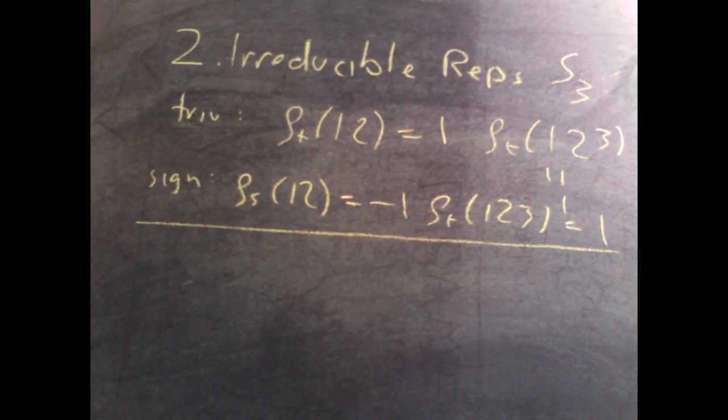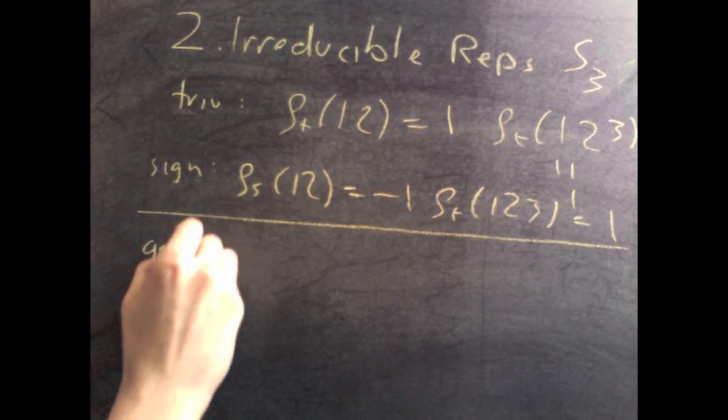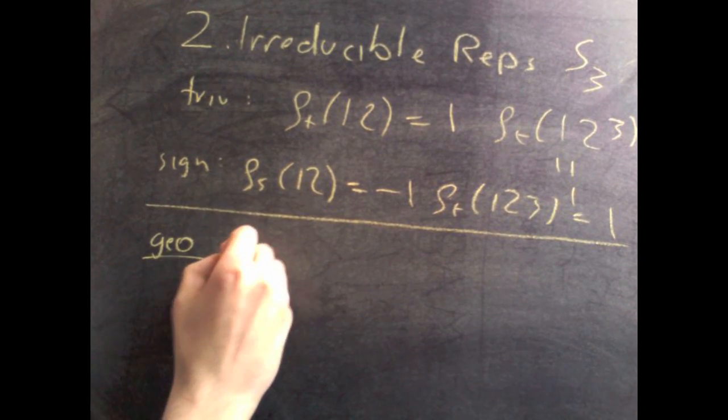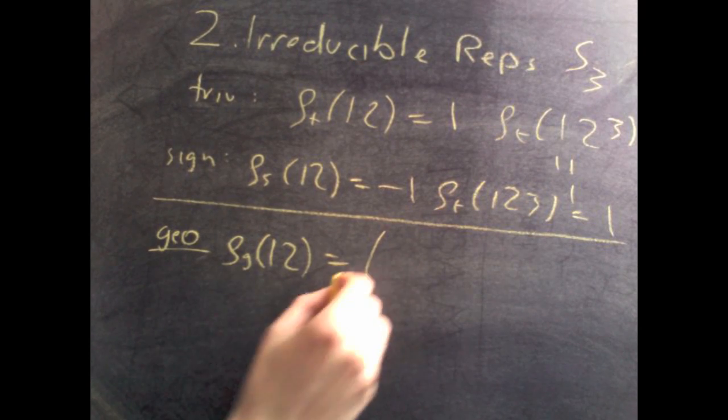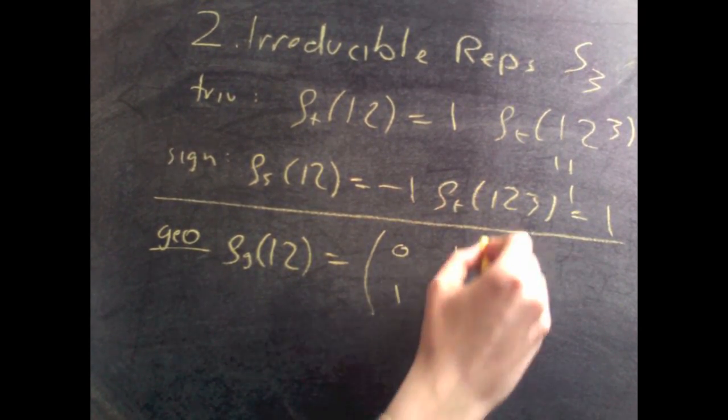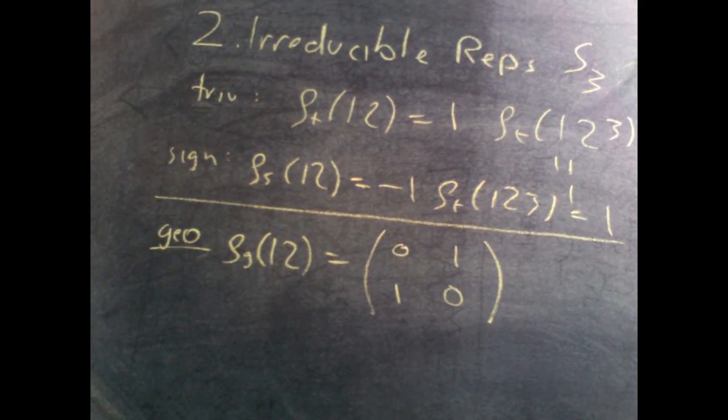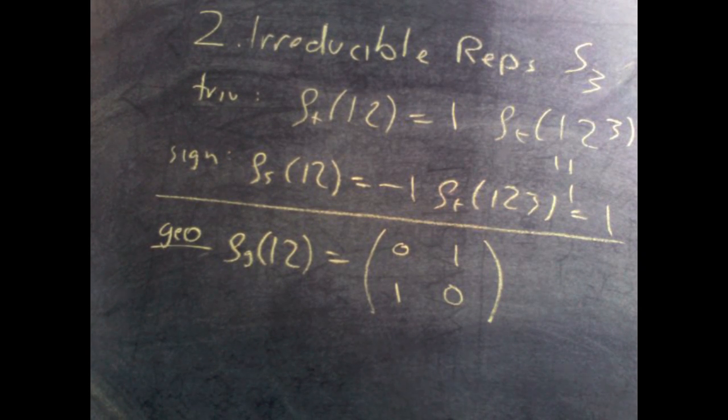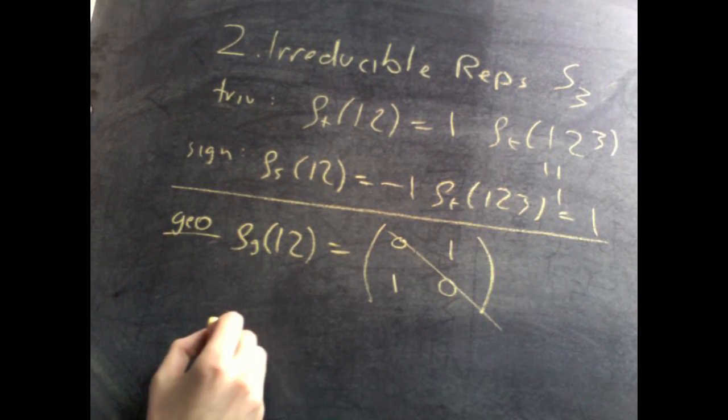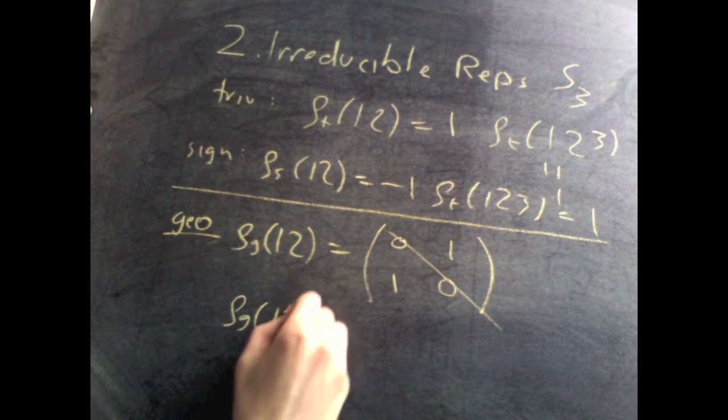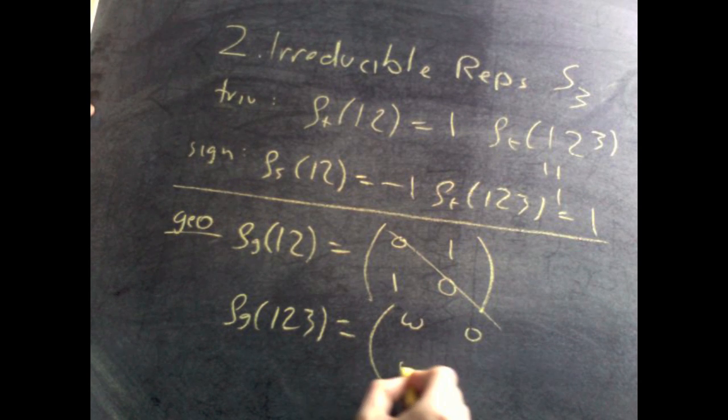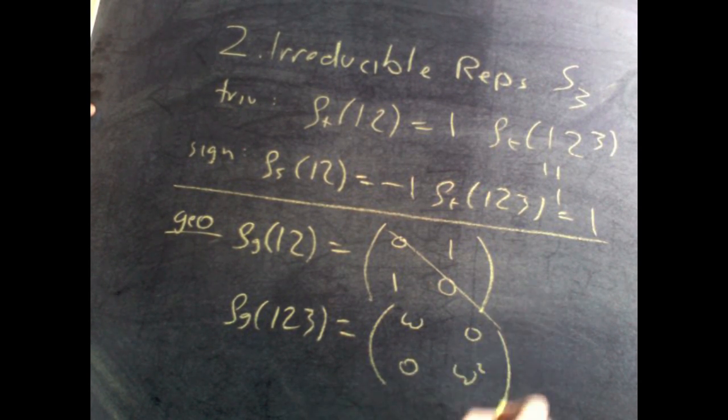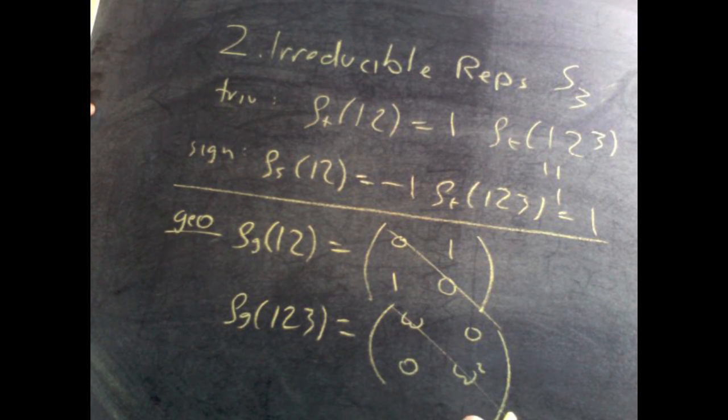But the slightly more interesting case is for the geometric representation. So rho g of the 2-cycle is just what we had in the reflection, like this. And that's going to have trace, which is the sum of the major diagonal, going to be 0. And rho g of the 3-cycle is given by omega, 0, 0, omega squared, which has trace omega plus omega squared.